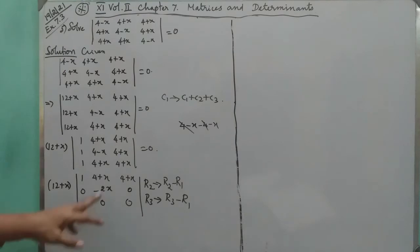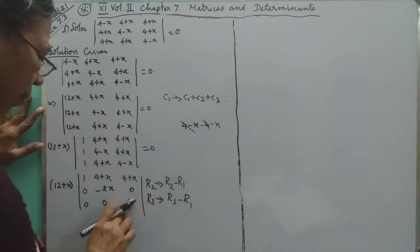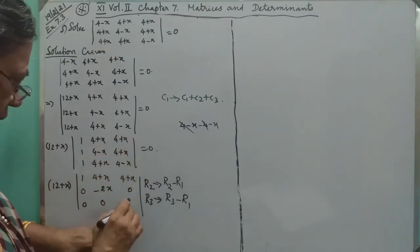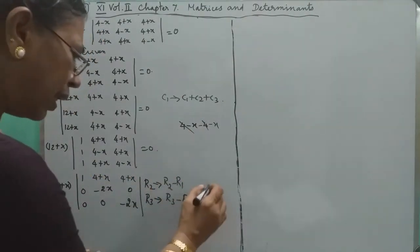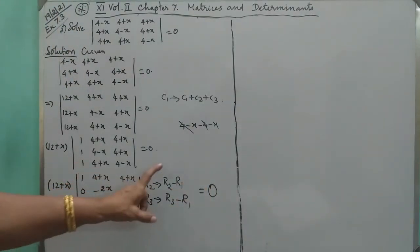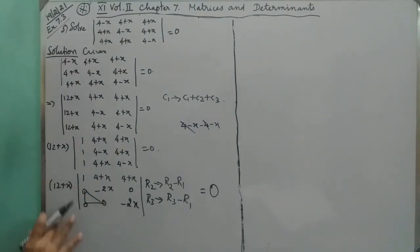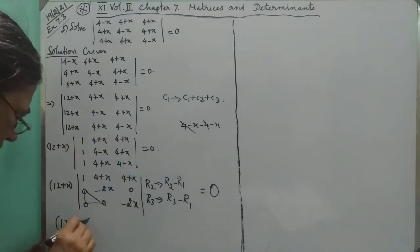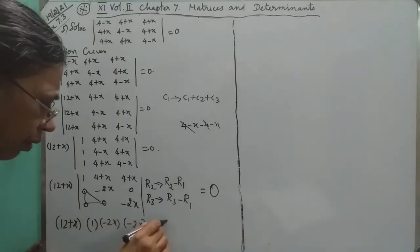This is minus x, so here it is minus x. The (4-x) is now separate. This forms an upper triangular matrix. For an upper triangular matrix, the determinant value is the product of diagonal entries. So (12+x) into 1 into (minus 2x) into (minus 2x) equal to 0.